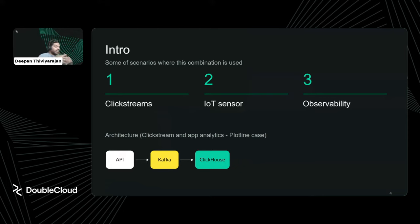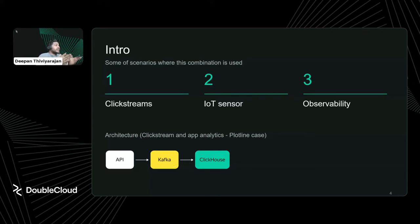Where are these Kafka and ClickHouse combinations widely seen? Mostly in clickstream scenarios, app analytics — like our customer Plotline — IoT sensors where you want to ingest data and run predictive maintenance or real-time analytics, and also in observability where monitoring logs come from different Kafka topics and are pushed into ClickHouse for faster querying and dashboard building.